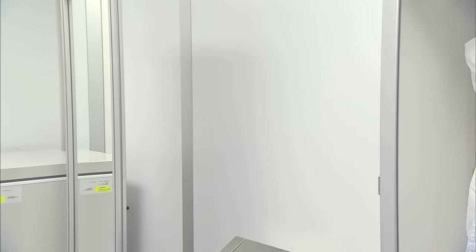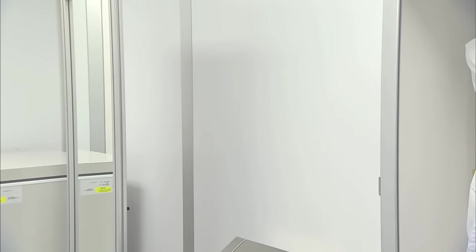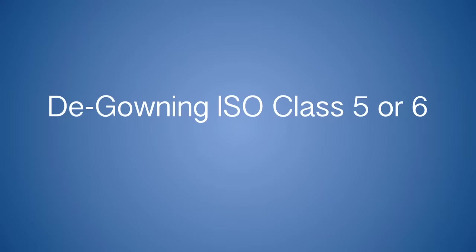Finally, exit the clean room, take off your booties and throw them away. The process is similar for an ISO class 5 or 6 clean room. Once again, take off everything in the reverse order.